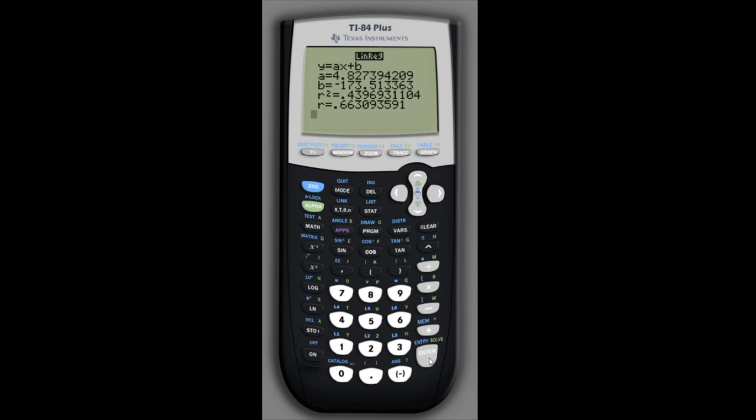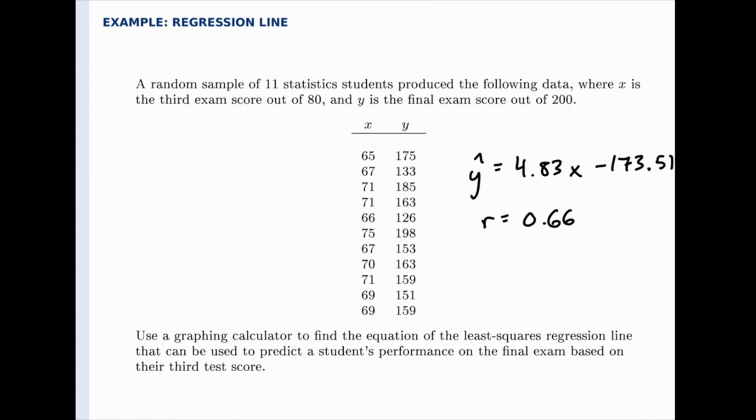And now we have a better sense of what this r represents. That's the correlation coefficient. The correlation coefficient is about 0.66, which means there's a moderate linear relationship and it's positive. So there we go, there's our regression line and there's the r value that goes with it.